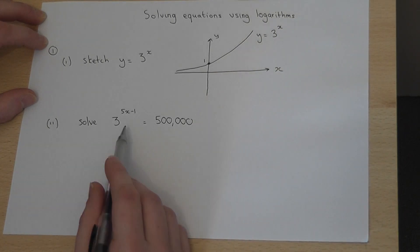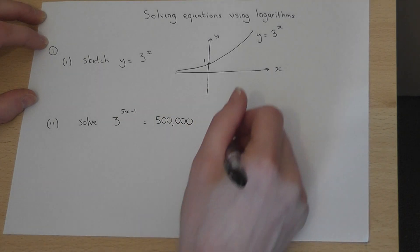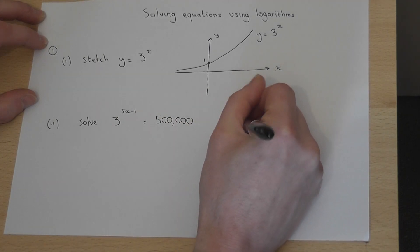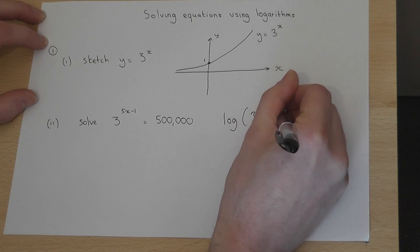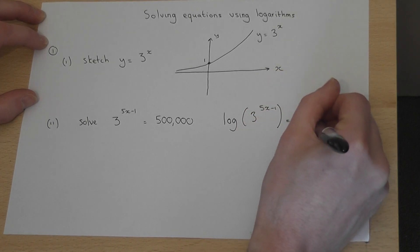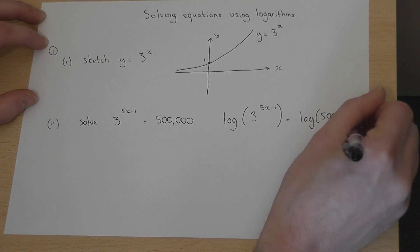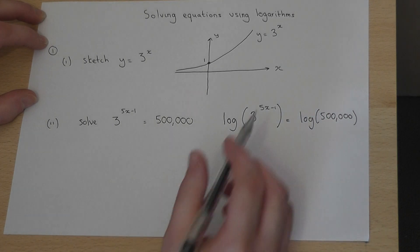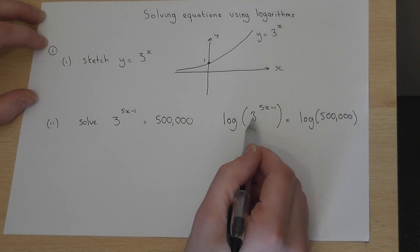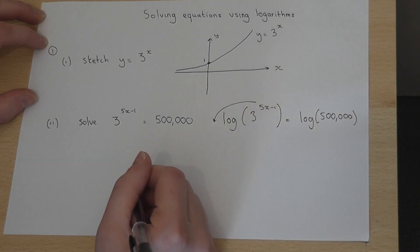If I were to log both sides of this equation, then the following happens. So log of 3 to the power of 5x minus 1 is log of 500,000. Now, one of the main log rules is that if you've got log of a number to a power, the power falls down next to the log.